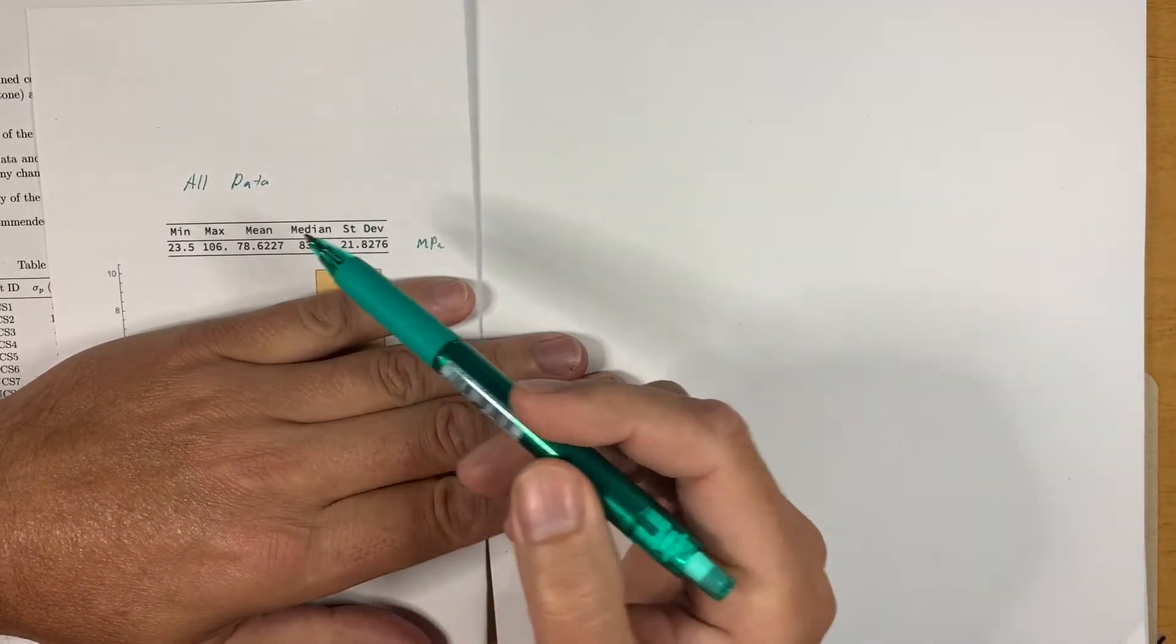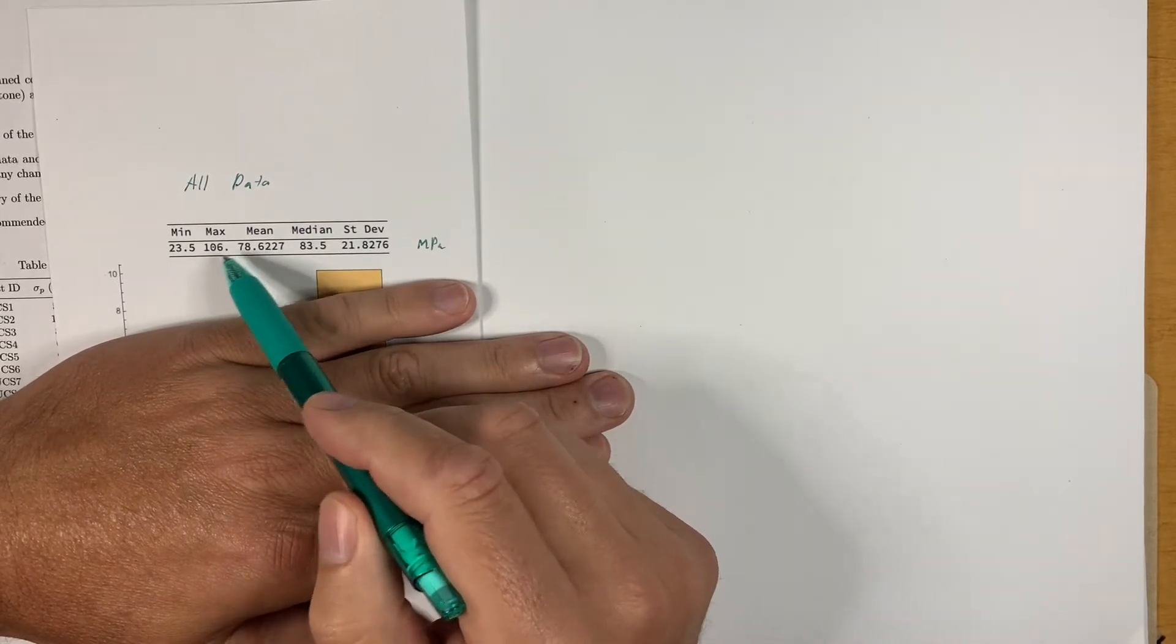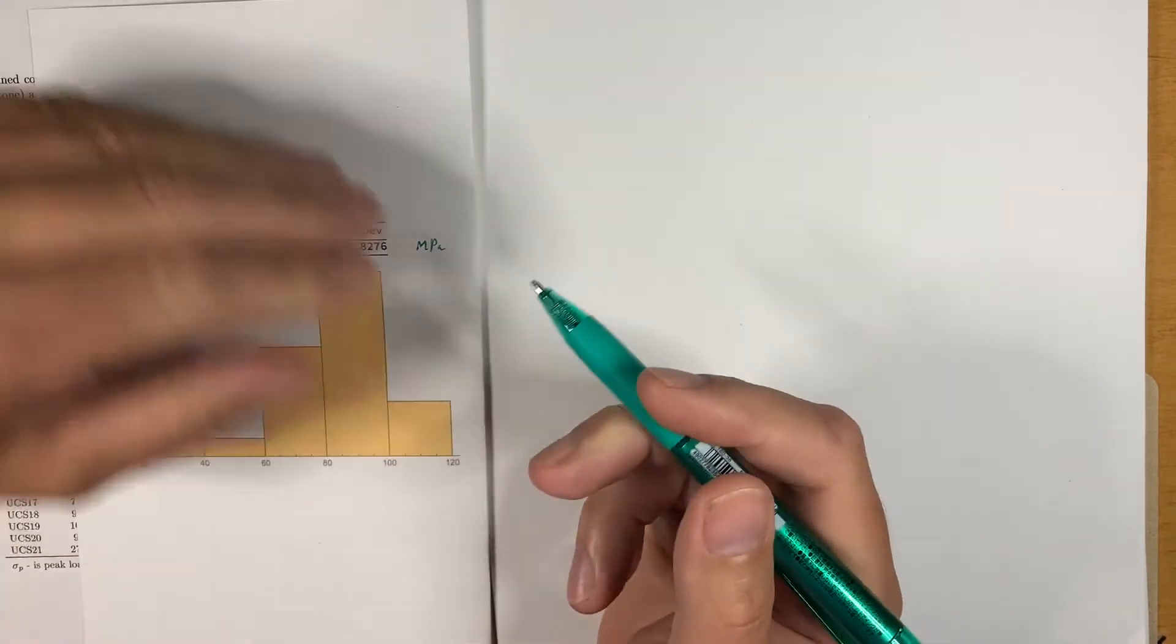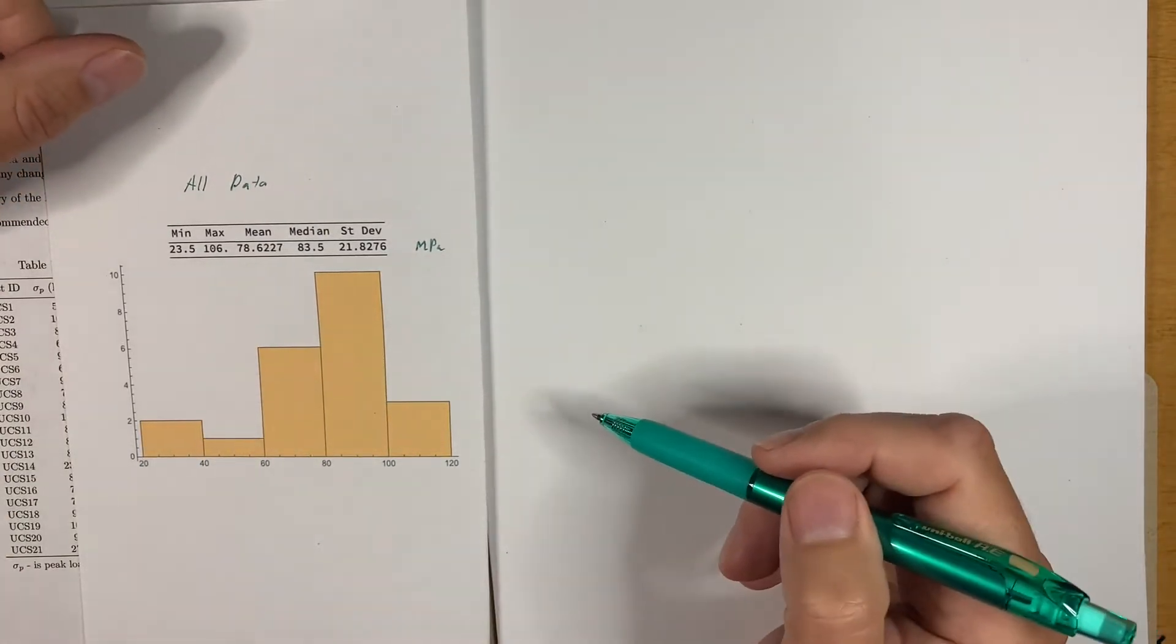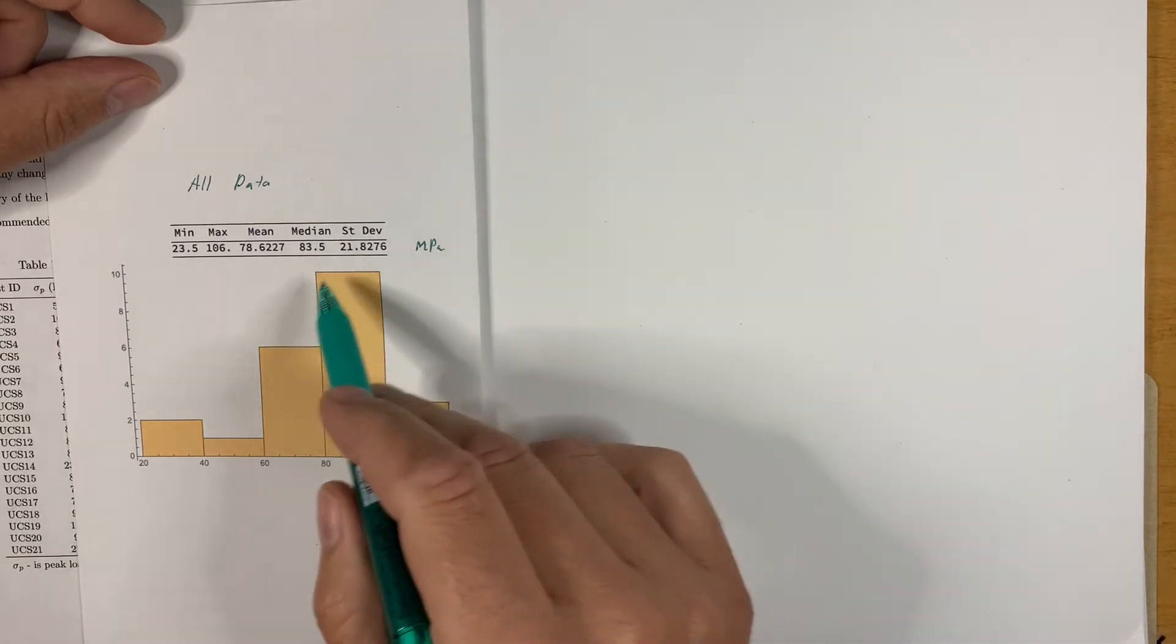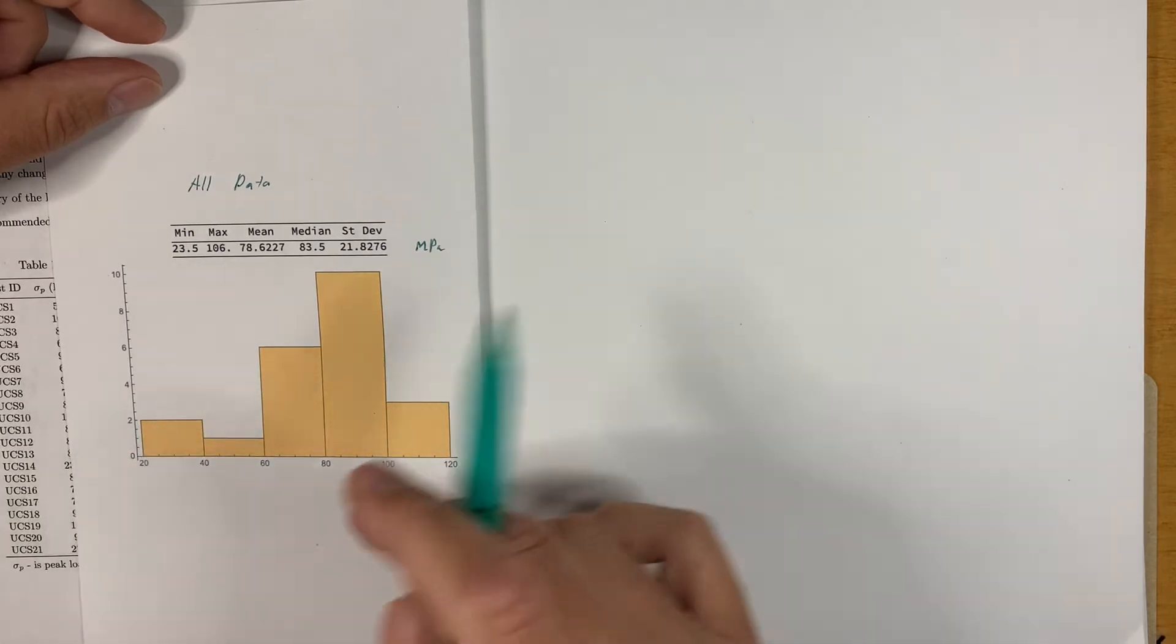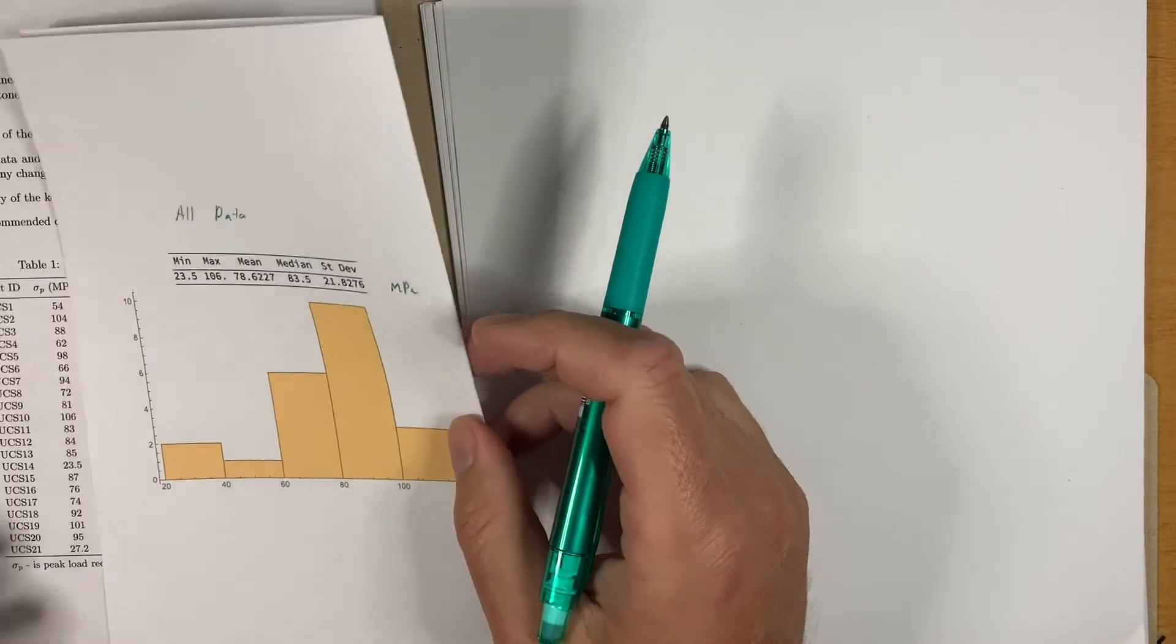So what do we see there? Clearly, the mean is much closer to the maximum than the minimum, much, much closer. So it is really skewed to the left. And the histogram really does show that, that there is a sort of normal-like distribution over here. But there's something going on in the very low end. And what is that?